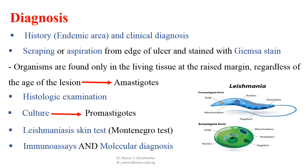We can also do histologic examination after biopsy taking, and culture on NNN media where we can see promastigote forms. We can do the skin test called the Montenegro test, and also immunoassay and molecular diagnosis.